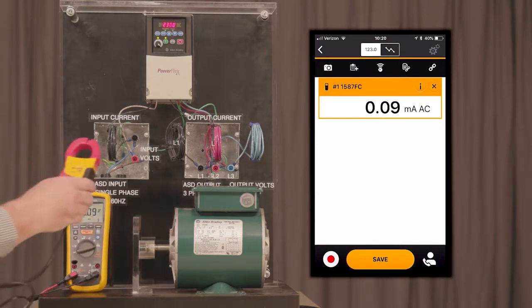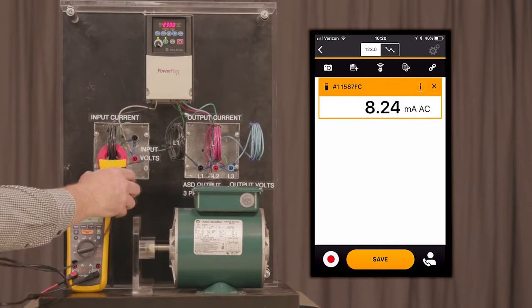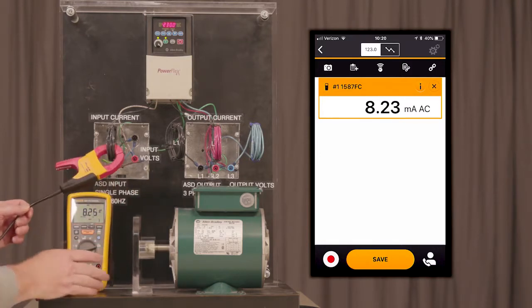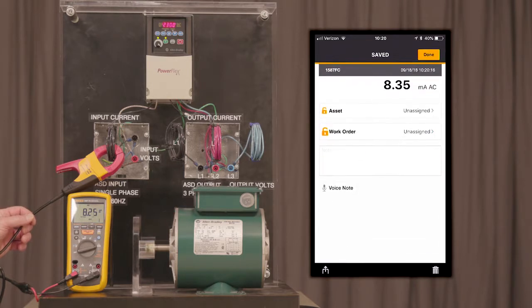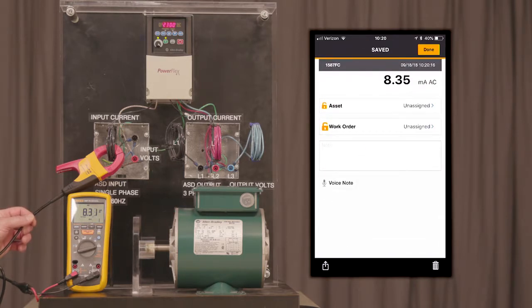Let's go ahead and make a current input measurement on the input to the VFD drive. As you can see here I'm getting 8.3 amps. We're going to save this measurement.